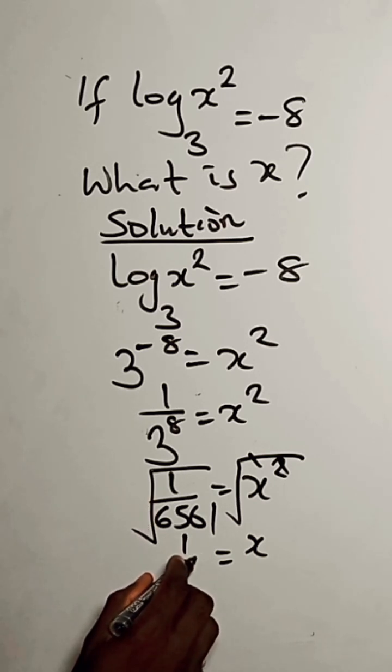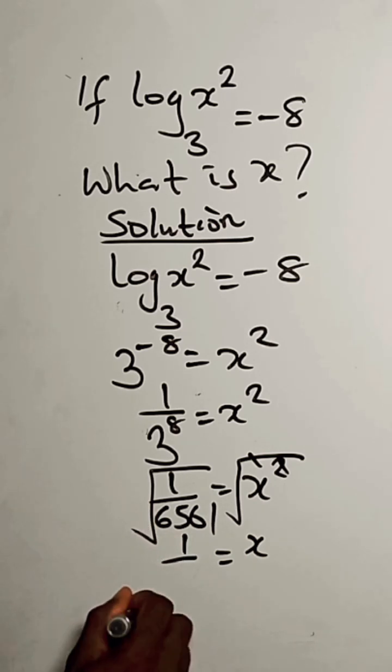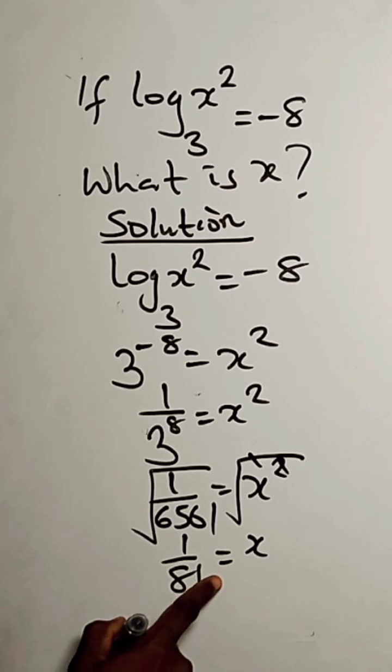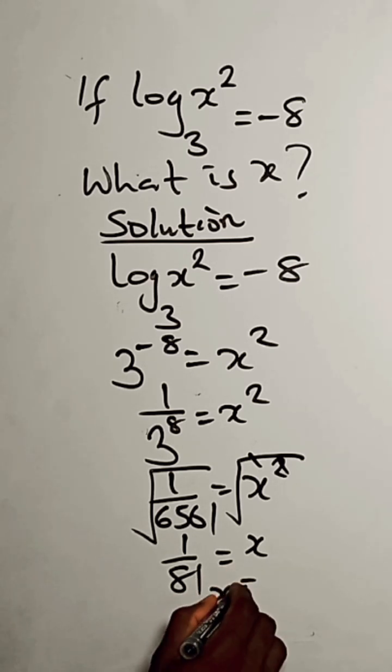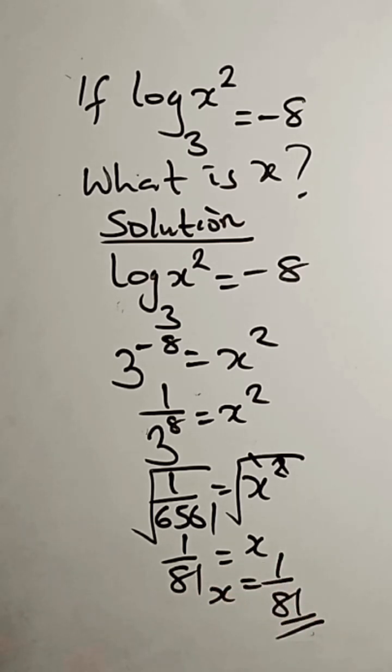So here we have this as 1 divided by, square root of this is 81. So x equals 1 over 81. Thank you very much.